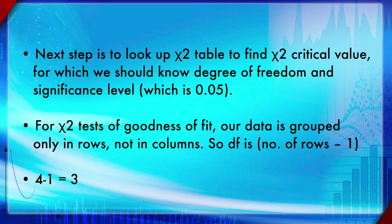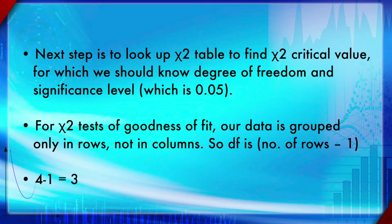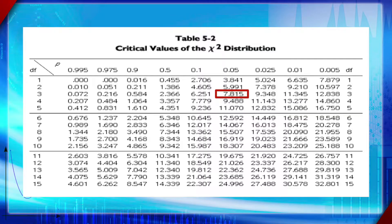The significance level is typically 0.05. For the goodness of fit test, data is grouped into rows only — there are no columns, unlike the test of independence. The expected frequencies fe are calculated from an explicit model, so degrees of freedom equals number of rows minus one. With four rows, degrees of freedom equals three.